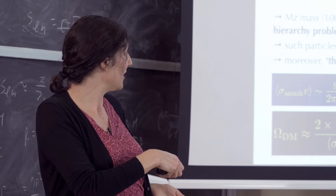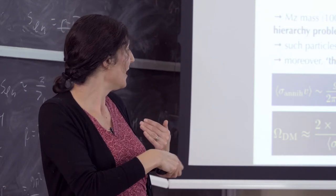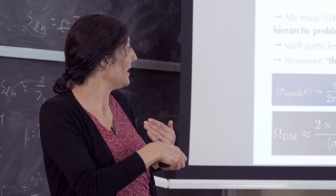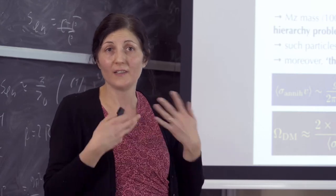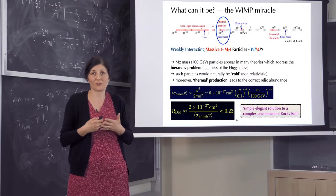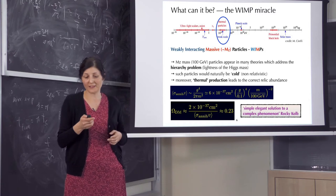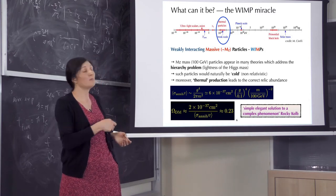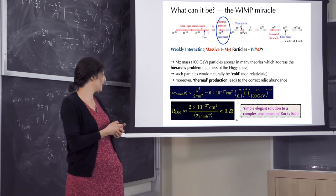We know how much dark matter there is. By reverse engineering, we can understand that if the particle would have 100 GeV, then this model would be very simple and natural to explain its origin. And this is why these so-called WIMP models are the most popular in dark matter search.